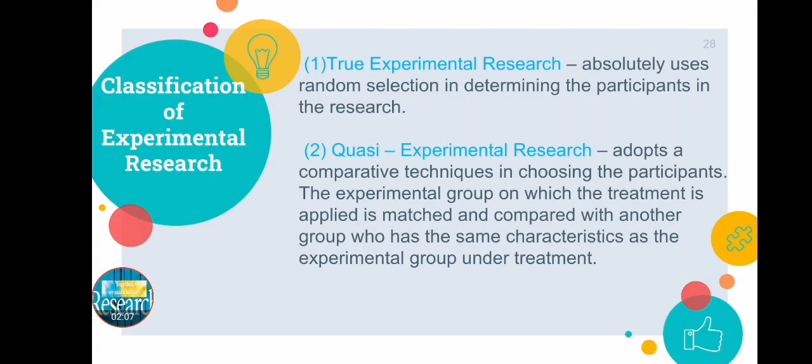There are also classifications of experimental research. There are two: one is true experimental research and the other is quasi-experimental research. In true experimental research, it absolutely uses random selection in determining the participants. In quasi-experimental research, it adopts a comparative technique in choosing the participants, so there is a comparison involved.